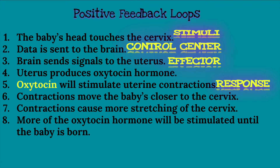First, the baby's head will touch the cervix. In this example, this is going to be considered the change in variable, also known as the stimuli. The data is then sent to the control center, which in this case is going to be the brain. The brain will send signals to the uterus, which is the effector. The uterus will then produce the oxytocin hormone — a hormone that increases labor contractions during childbirth and controls vaginal bleeding after childbirth. The oxytocin hormone will then stimulate uterine contractions, which is your response.